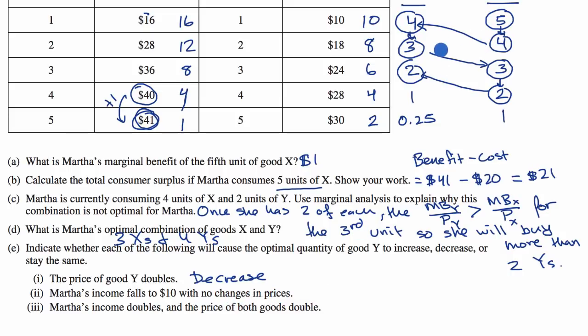Martha's income doubles and the price of both goods double. In that case, things would stay the same because she could buy that exact same combination. It would just cost twice as much, but her budget is now twice as much. So things would stay the same. She would buy the same quantities of both X's and Y's. And they're just asking about Y's. And we're done.